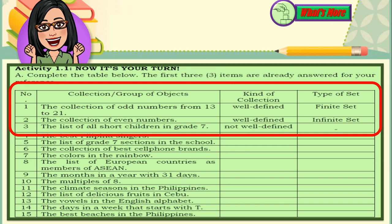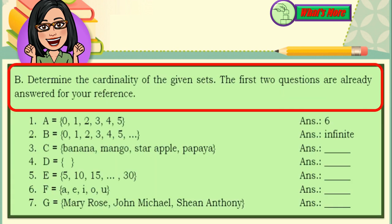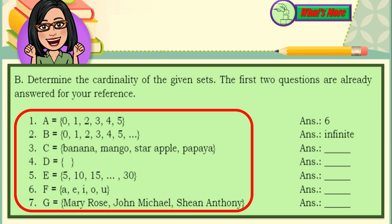Let us observe the first three items. Number one: the collection of odd numbers from 13 to 21 — it is well-defined and it is a finite set. Number two: the collection of even numbers — it is well-defined and it is an infinite set. But number three: the list of all short children in grade seven — which is not well-defined, therefore it is not a set and does not have a type. Set B: determine the cardinality of the given sets. The first two questions are already answered for your reference.